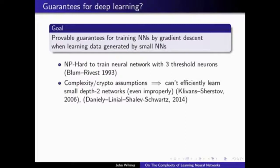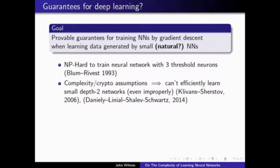One weakness of these earlier lower bounds for neural networks is that they're arguably somewhat unnatural. The input distributions are all discrete, whereas in the real world you would expect the data you're actually encountering to be generated by some nice smooth distribution. And maybe the activation functions, if your ground truth data is really generated by some neural network, you would expect them to be smooth. So what if we ask this question for maybe more natural neural networks?